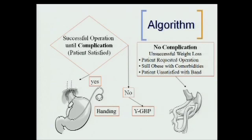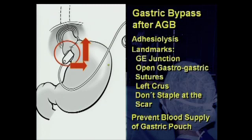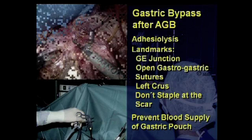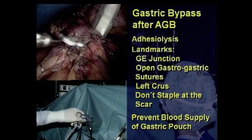There are a few landmarks, a few steps when we start doing this conversion. First of all, we dissect the gastroesophageal junction, clarify it, and always open the gastro-gastric sutures. We open the band and try to keep the pouch with a good blood supply. That means we start dissecting the stomach one or two centimeters below the initial placed band. Starting with adhesiolysis, opening the gastro-gastric sutures, removing the scar tissue on the stomach, opening the band — and you see a very nice blood supply here below the band. This is what we really should preserve.